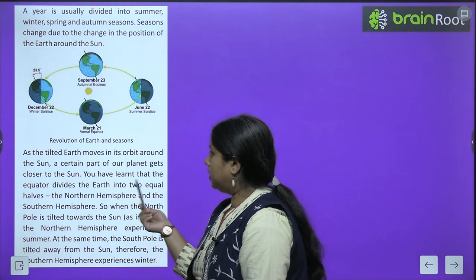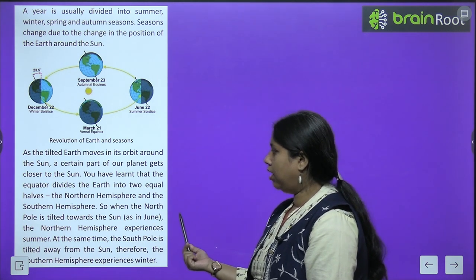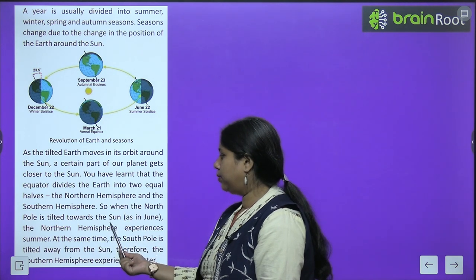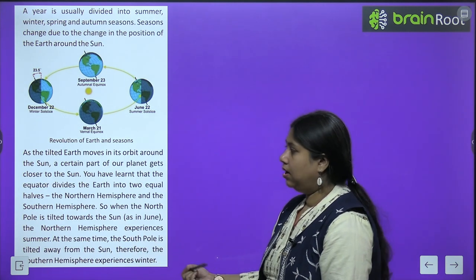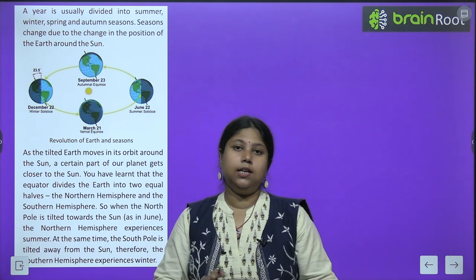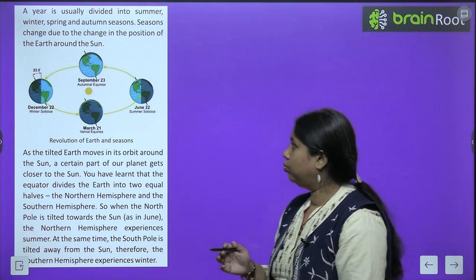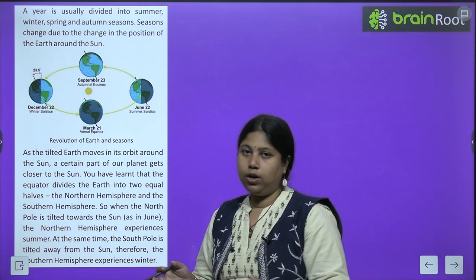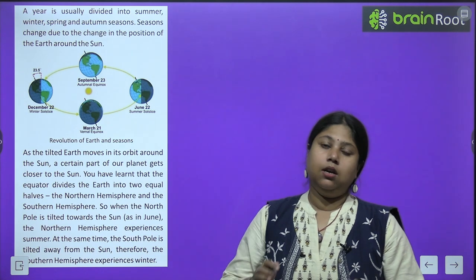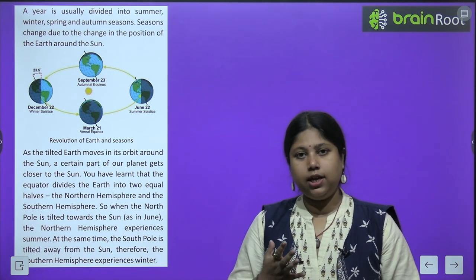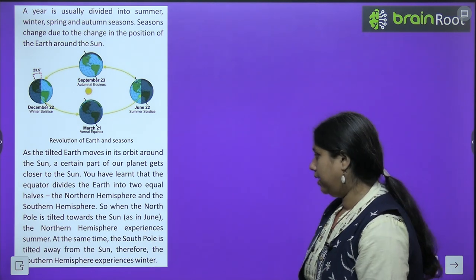As the tilted earth moves in its orbit around the sun, a certain part of our planet gets closer to the sun. You have learnt that the equator divides the earth into two equal halves — the northern hemisphere and the southern hemisphere. When the north pole is tilted towards the sun in June, the northern hemisphere experiences summer. Earth jo hai thoda sa tilted hai suraj ki taraf — north pole ki taraf se — so jab north pole bahut zyada paas aa jaata hai sun ke, to north ke areas mein summer season experience hota hai, aur us time pe south ke areas mein winter season hota hai.